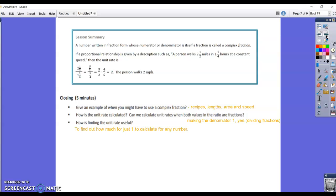Lesson summary. A number written in fraction form whose numerator or denominator is itself a fraction is called a complex fraction. If a proportional relationship is given by a description, such as a person walks two and a half miles in one and a fourth hours at constant speed, then the unit rate is...